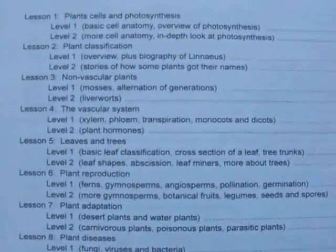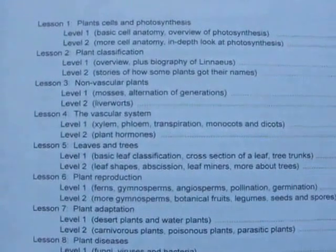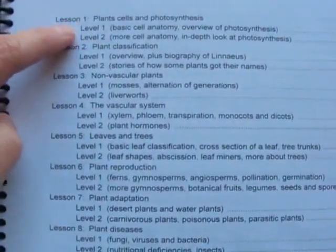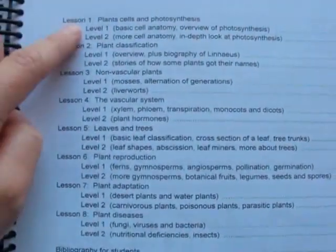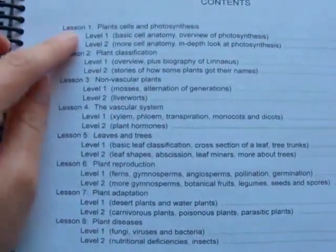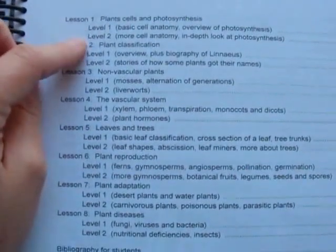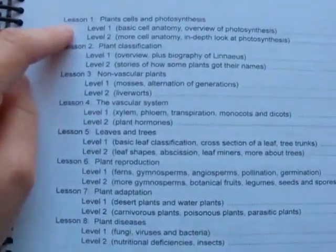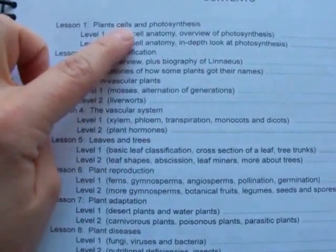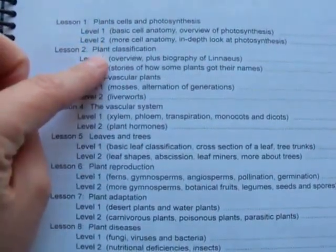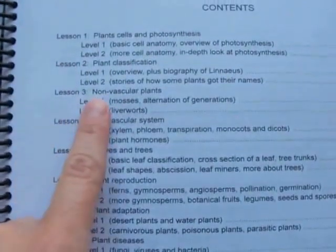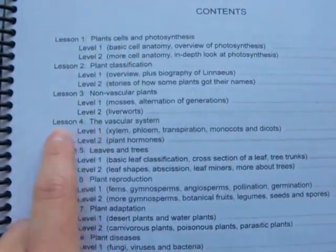I'm just going to go through this with you a little bit. So the table of contents here, you can see there are 8 lessons. Each lesson has two levels, Level 1 and Level 2. Because this is for a wide range of age, Level 1 is the easier and then Level 2 is harder.